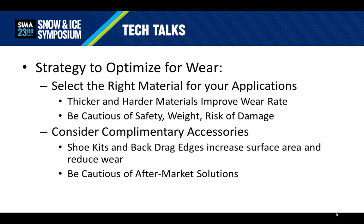So to summarize, while there's a lot to consider, we can boil down a strategy to optimizing for wear to a couple of things. First, selecting the right material for your applications is important — thicker and harder materials certainly improve wear rate. Be cautious of safety, the weight impact on your vehicle, and the risk of damage to lots and surfaces. You might also consider complementary accessories: shoe kits and back drag edges increase surface area and can reduce wear on the cutting edge. Be cautious of aftermarket solutions — while they may save you some money, they can impact how your plow works and dramatically impact the weight on the vehicle.